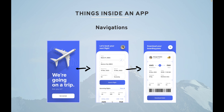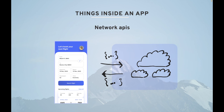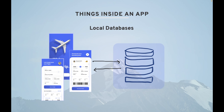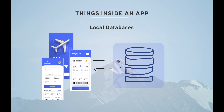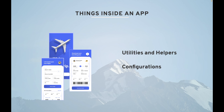Let's now see what things are inside your application. The first and very important thing is navigation — you have multiple pages and you navigate through all of them. Next are network APIs, where your application talks with lots of APIs to get data from the server. Then local databases for local cache or saving data. Notifications are also important — they can automatically open any page. Finally, utilities, helpers, and configuration.